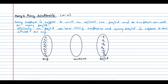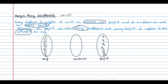The requirements state: every employee is supposed to work on at least one project, an employee can work on many projects, a project can have many employees, and every project is supposed to have at least one employee. You can clearly see the pattern: at least one, and many — on both sides.